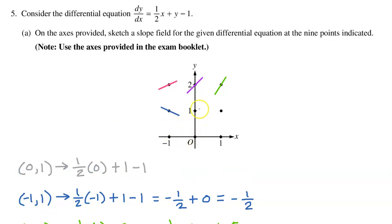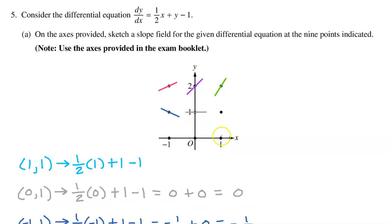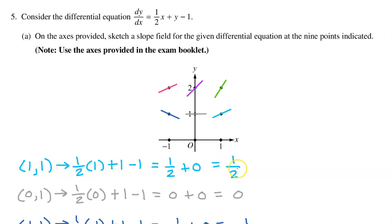At the point (0, 1), we have one-half times zero plus 1 minus 1. That's zero, so draw your slope as a horizontal line. At the point (1, 1), we have one-half times 1 plus 1 minus 1. This equals one-half, so draw an increasing slope less than a 45-degree angle.